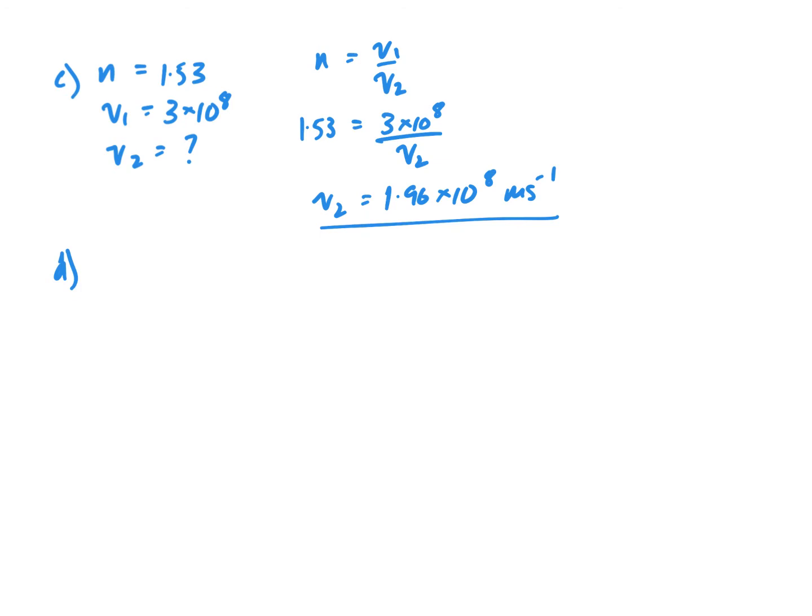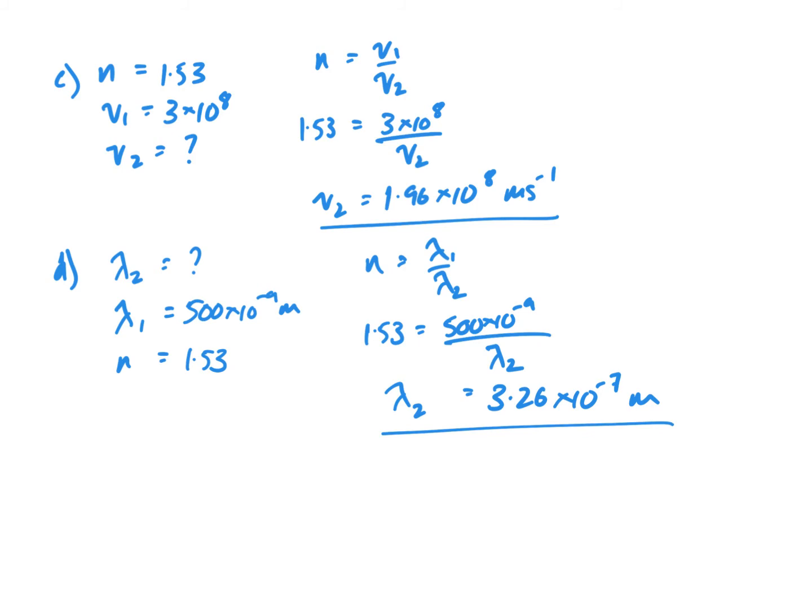Then we've got all sorts of options for getting lambda 2. We could use the fact that we know lambda 1 and we know n, that's probably the easiest. Or we could use v equals f lambda within the medium. We could use v1 over v2 equals lambda 1 over lambda 2, lots of different possibilities. Rearranging that gives us 326 nanometers.